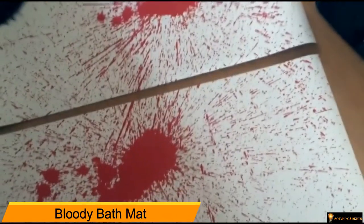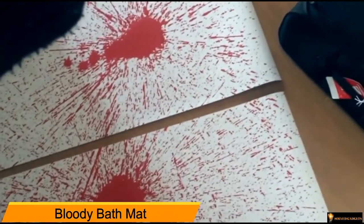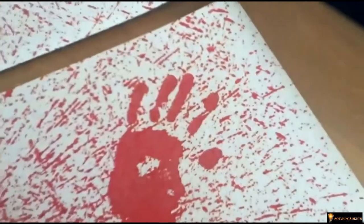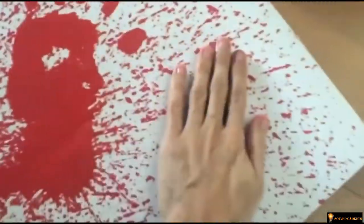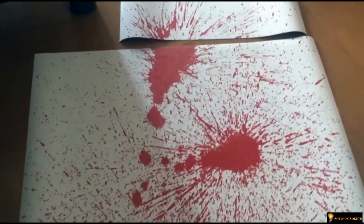Bloody bath mat. Color changing sheet that turns red when wet, and then the footprints disappear like magic when dry. The original amazing blood-dripping color change effect. Give them the shock of their life as they leave a trail of blood stains out of the shower. An incredibly unique prank that you can hide nearly anywhere.